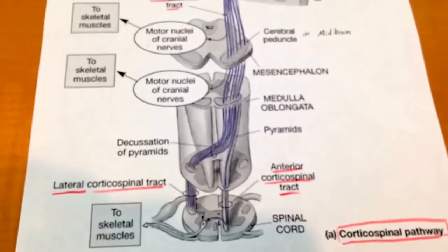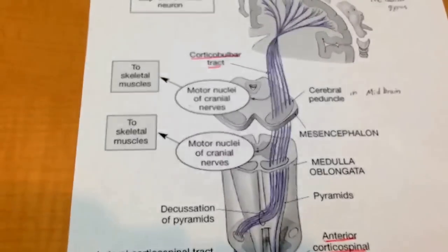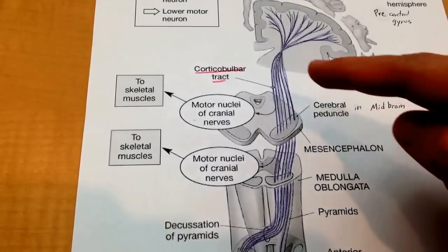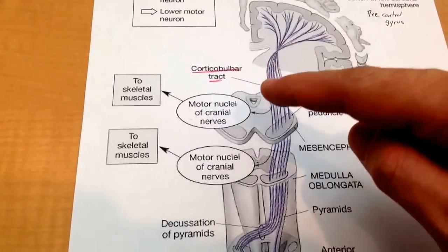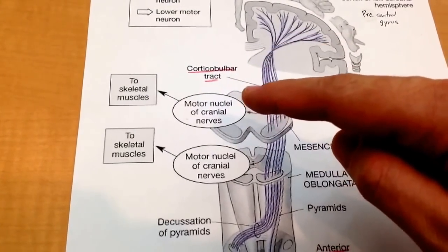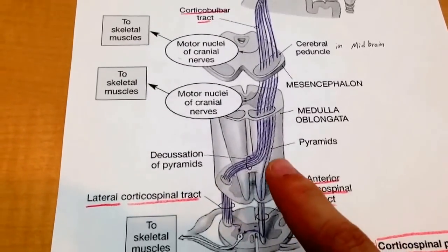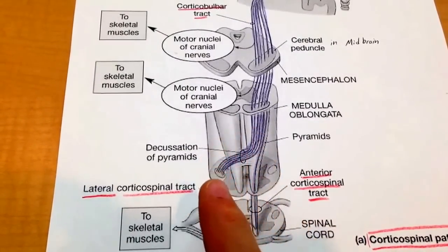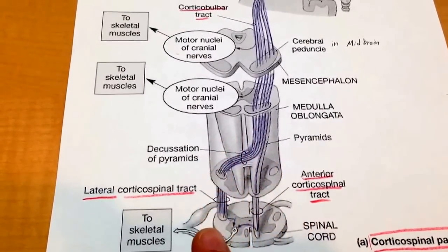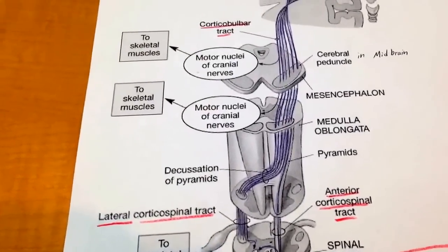In review, the corticospinal tract has three divisions: the corticobulbar part where the cranial nerves are joined up, the anterior tract — the small portion that comes in the front — and the main majority, which is the lateral tract.